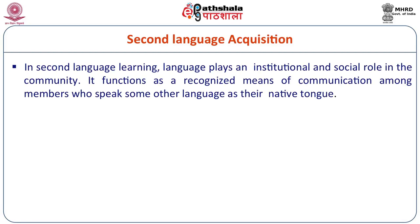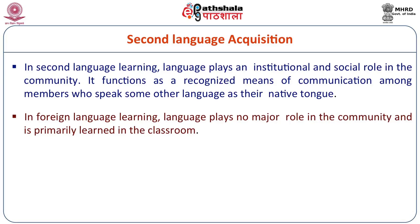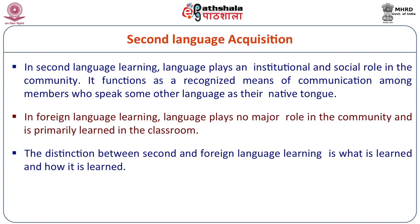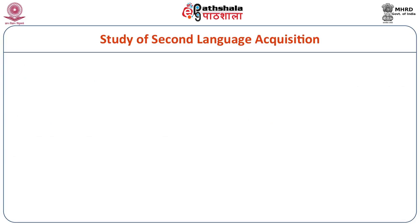In second language learning, language plays an institutional and social role in the community — it functions as a recognized means of communication among members who speak some other language as their native tongue. In foreign language learning, the language plays no major role in the community and is primarily learned in the classroom — it is learned, not really acquired. The distinction between second and foreign language learning is what is learned and how it is learned.